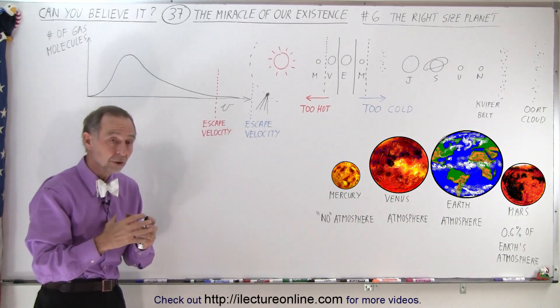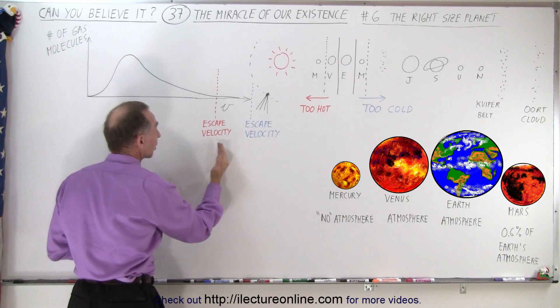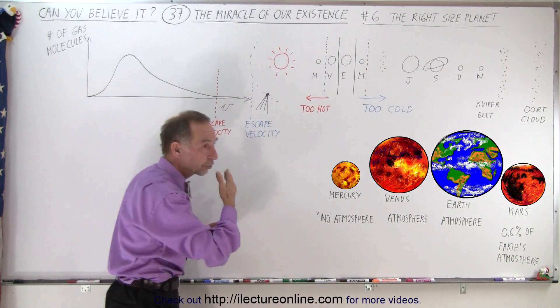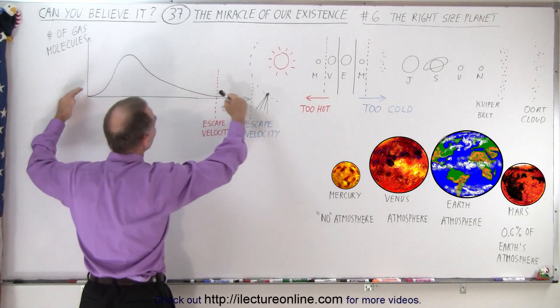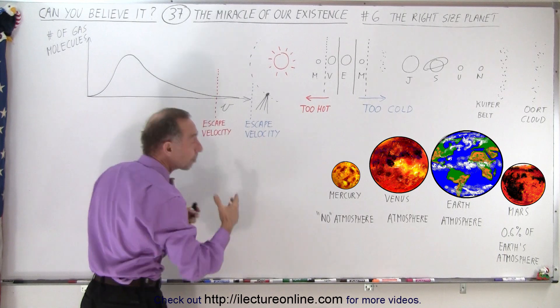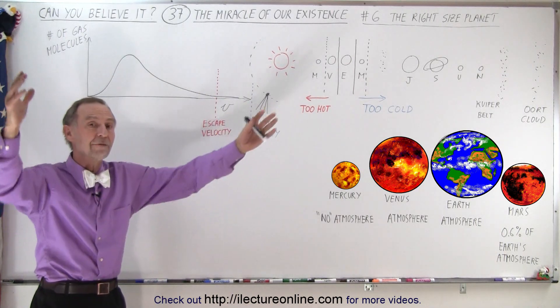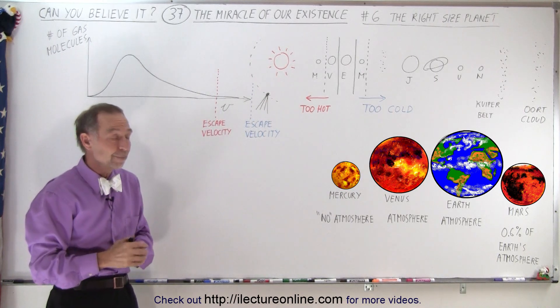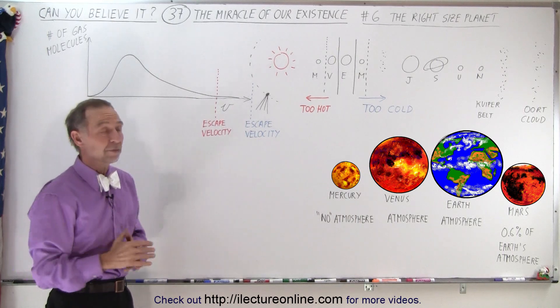Well the smaller the planet, the less gravitational force, so that means the escape velocity moves to the left. That's what happened to Mars, and that's why the very fast moving molecules are able to get away. And as soon as they're gone, the whole mass will redistribute itself, and you always will have some molecules moving faster than escape velocity, and they will slowly leak off into space, leaving less and less and less atmosphere. And after four and a half billion years, Mars has virtually no atmosphere left.